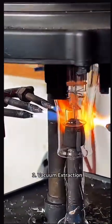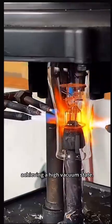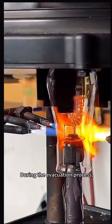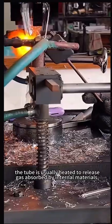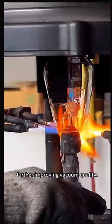Vacuum extraction. A vacuum pump is used to remove air from the inside of the tube, achieving a high vacuum state. During the evacuation process, the tube is usually heated to release gas absorbed by internal materials, further improving vacuum quality.